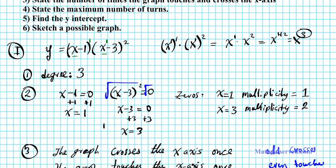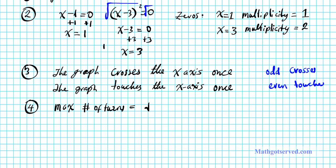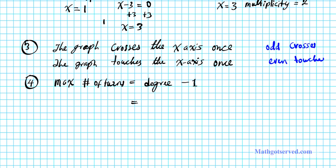Number 4: the maximum number of turns. The maximum number of turns is one less than the degree. So the maximum number of turns equals degree minus 1. The degree of this polynomial is 3, so we subtract 1 from 3, giving us 2. That is the maximum number of turns this graph can have.